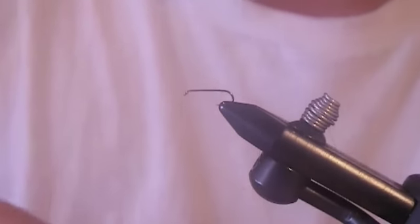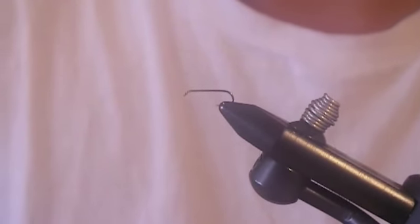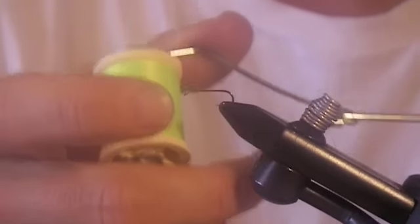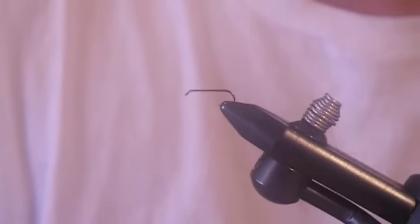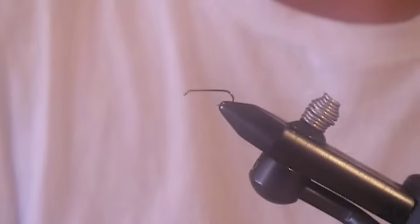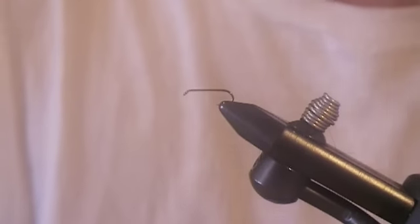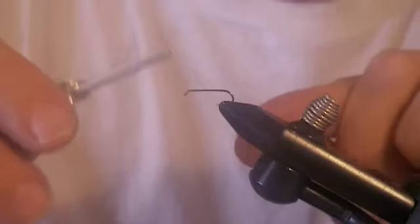I like this one with a fluorescent chartreuse body. That's the color of thread that I'm using. You can also do just a regular Adam's body, like a gray body or a red body, a lot of different ways. I'm going to tie this one in chartreuse.